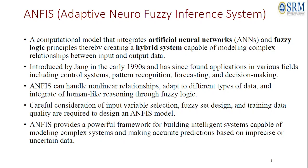An ANFIS system is a combination of artificial neural networks and fuzzy logic systems. In an artificial neural network there are multiple hidden neural layers, or even a single hidden layer, with an input layer and an output layer. In a fuzzy system, fuzzification as well as defuzzification happens, and in the middle there is a fuzzy inference system where fuzzy logic principles are applied.